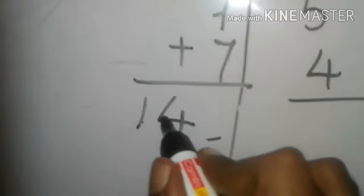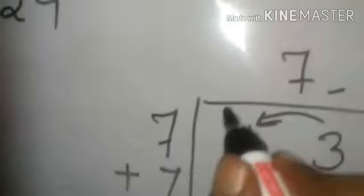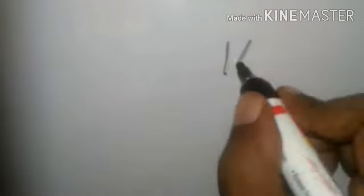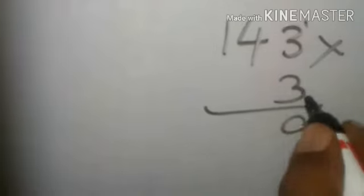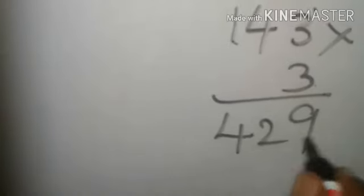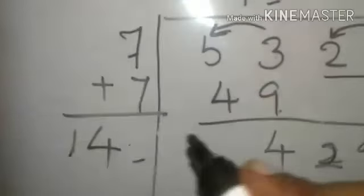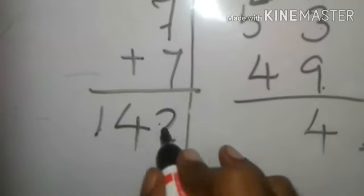So if I do 3, 143 into 3. Let's check that. 143 into 3. Three into three is 9. 143 is 42. So you have 429. So yeah, we needn't check it by 7 because we got the answer here.